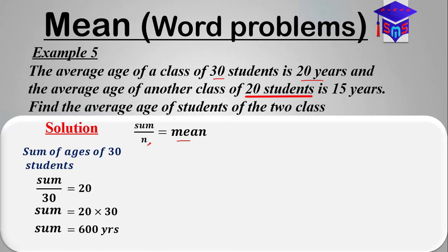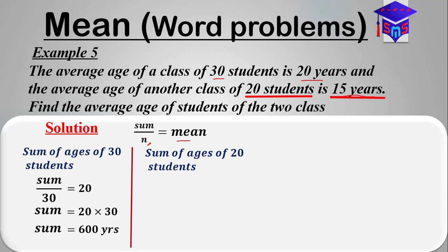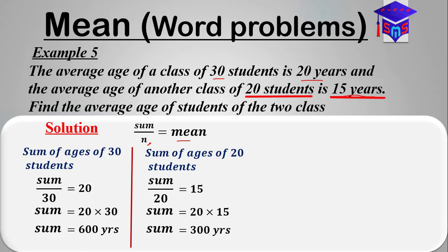Now we find the sum of the ages of the 20 students in the other class. For this class, n is 20 and the mean is 15. Substituting these values, sum over 20 equals 15. Multiplying both sides by 20 gives the sum equal to 20 times 15, which equals 300 years.